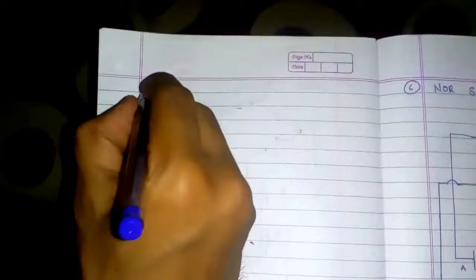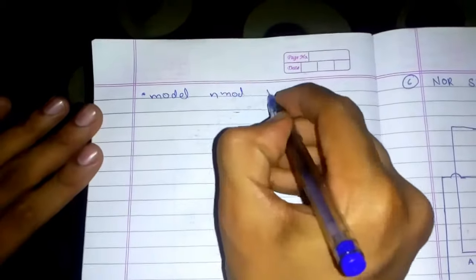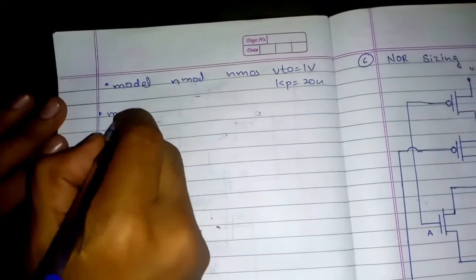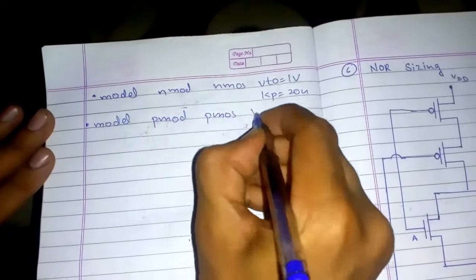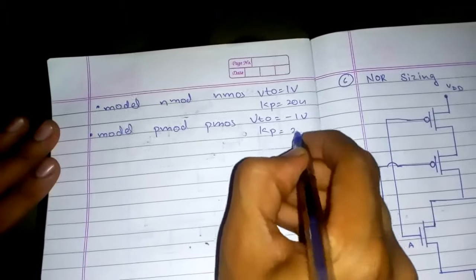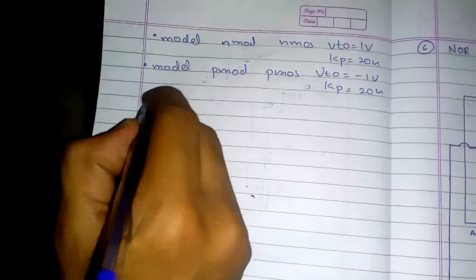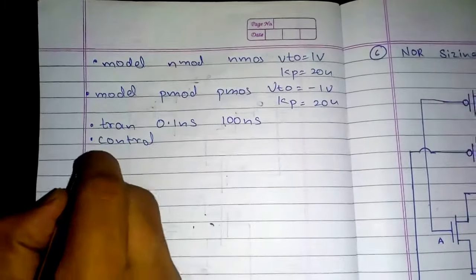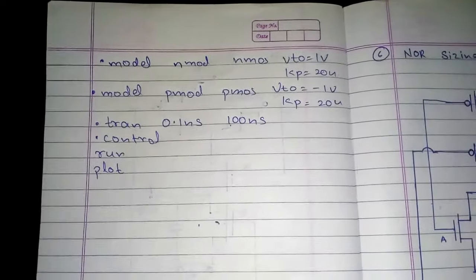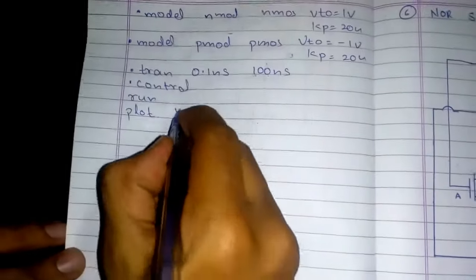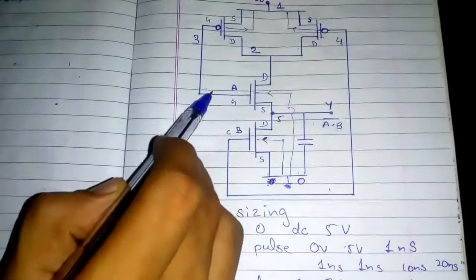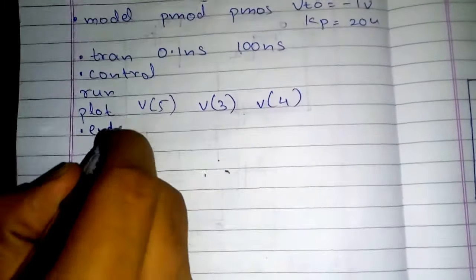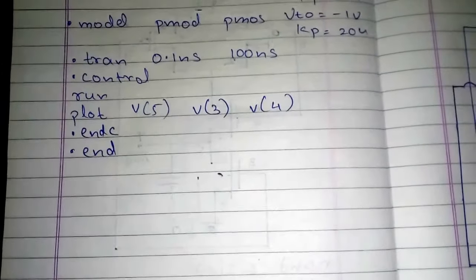Now I write the dot model statements. Dot model N_MOD NMOS: VTO equals 1V, KP equals 20u. Dot model P_MOD PMOS: VTO equals minus 1V, KP equals 20u. Then dot tran 0.1 nanosecond 100 nanoseconds. Then dot control, run, then plot: V(5) which is the output, V(3) which is input A, and V(4) which is input B. Then dot endc and dot end.